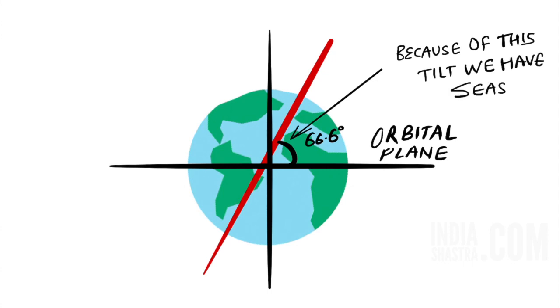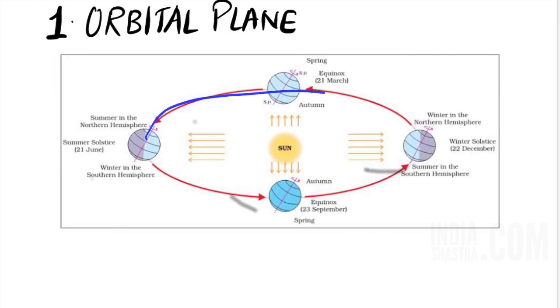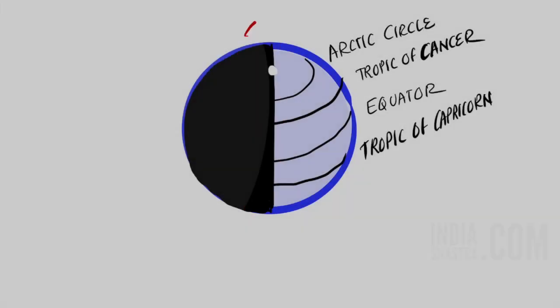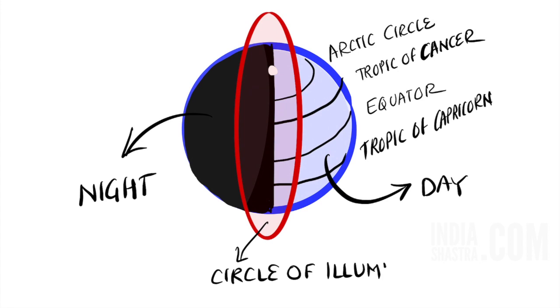In this chapter, we will learn how this tilt causes the seasons of the Earth. Let us first talk about the orbital plane. It is the plane formed by the orbit. Earth is spherical and the circle that divides the day from the night on the globe is called the circle of illumination.